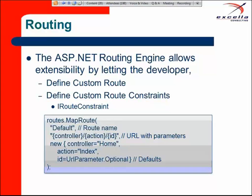The code sample on the slide is very common — it's the basic route table entry for an ASP.NET MVC application as it comes out of the box. The default route has the first parameter as controller, second as action, and third as ID, which can be optional as stated in the code. That brings us to the first demo.